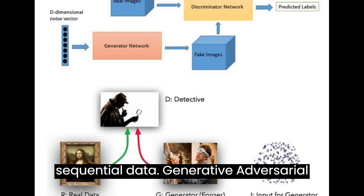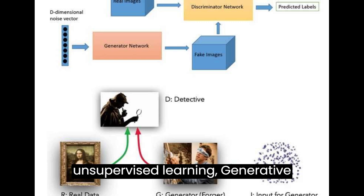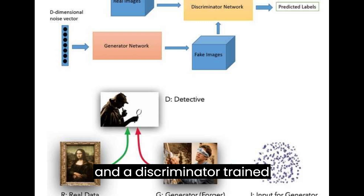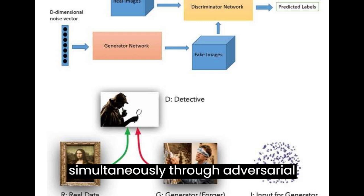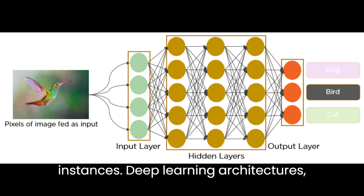Generative Adversarial Networks (GAN). Type: unsupervised learning, generative modeling. Use: consists of a generator and a discriminator trained simultaneously through adversarial training. Used for generating new data instances.